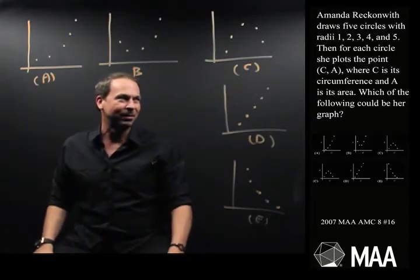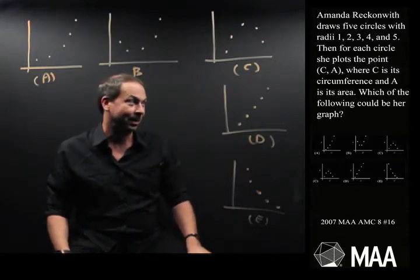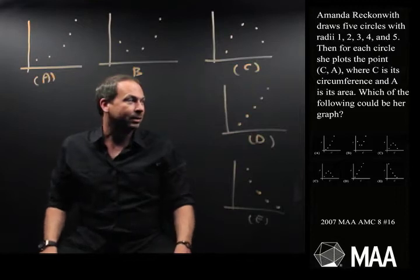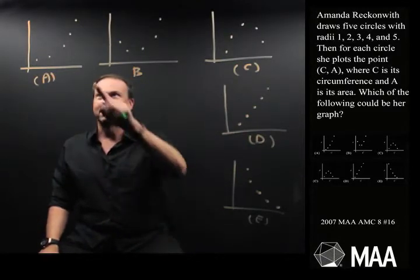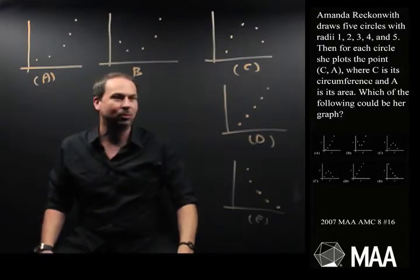Amanda Rackenwith draws five circles with radii 1, 2, 3, 4, and 5. Then for each circle, she plots the point C, A, where C is the circumference and A is its area. Which of the following, here they are, five examples, which would be her graph?